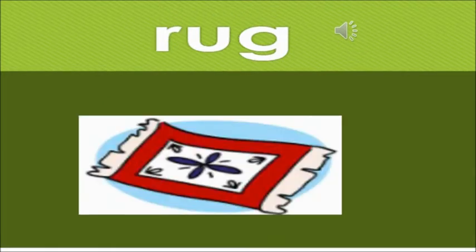So the word is RUG. We know the sound of R is 'r' and UG, together it makes RUG. What is RUG? RUG is a piece of cloth that is spread on the floor.